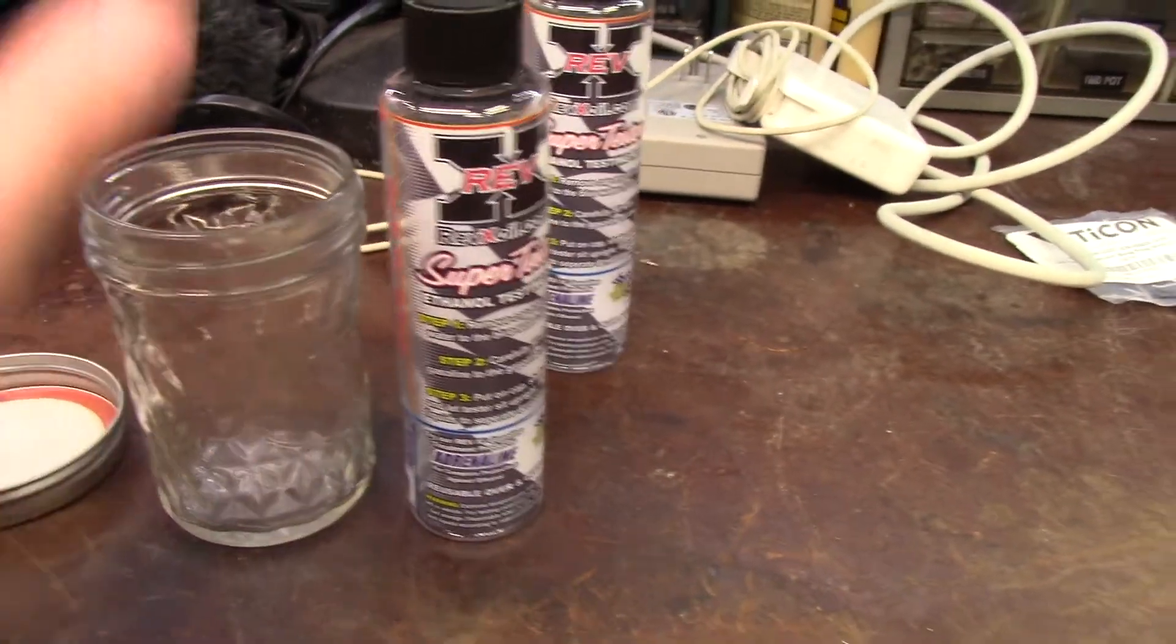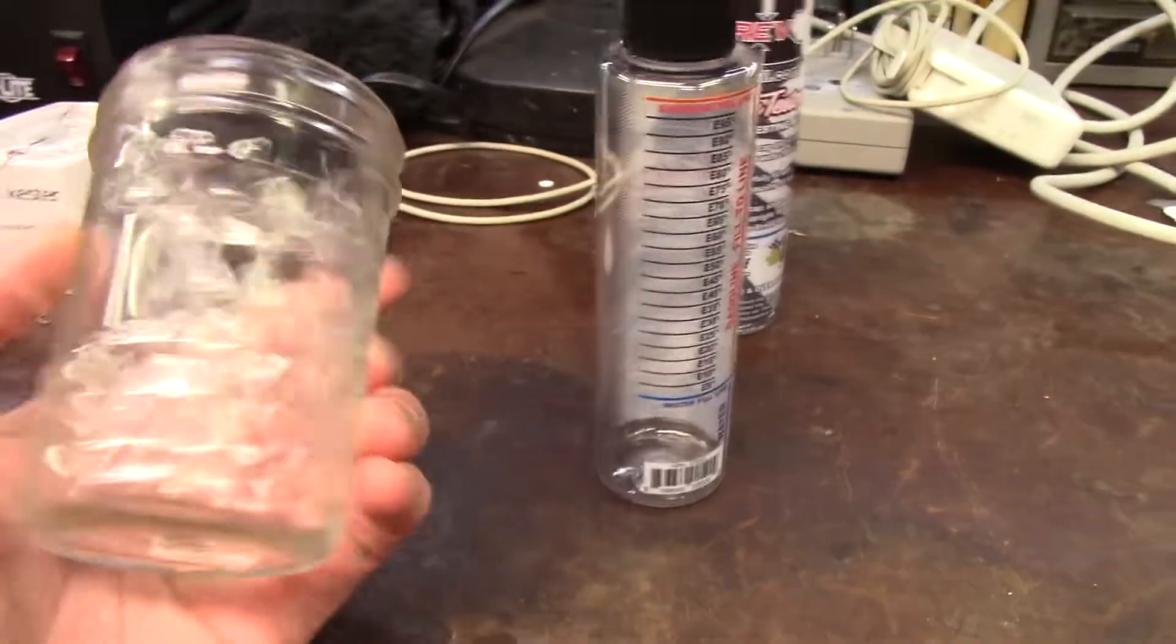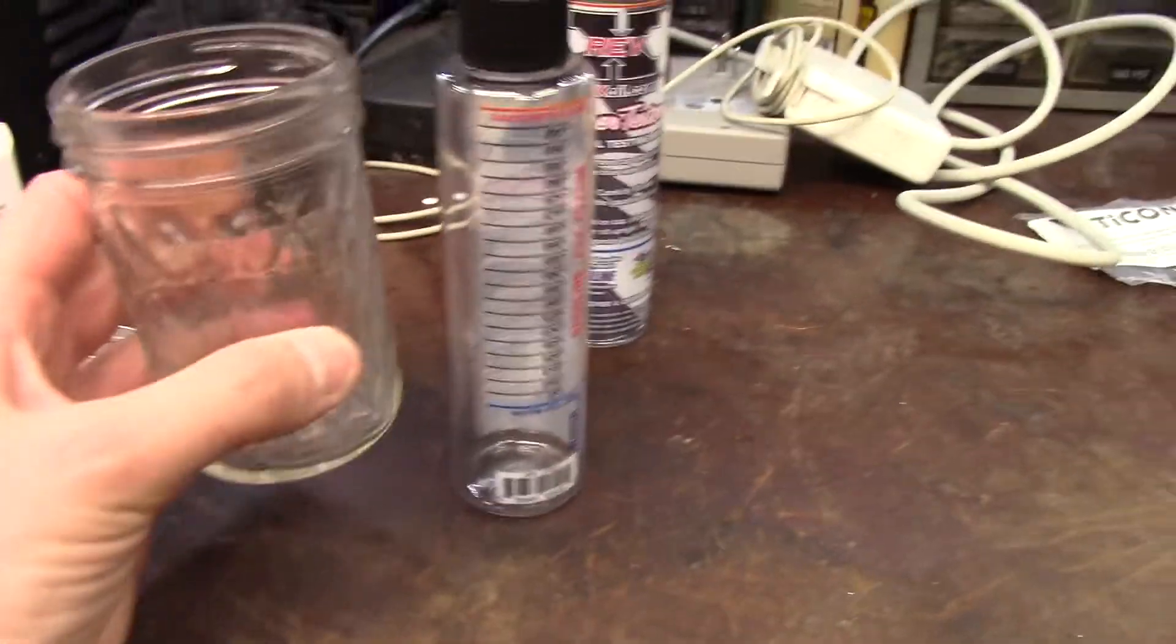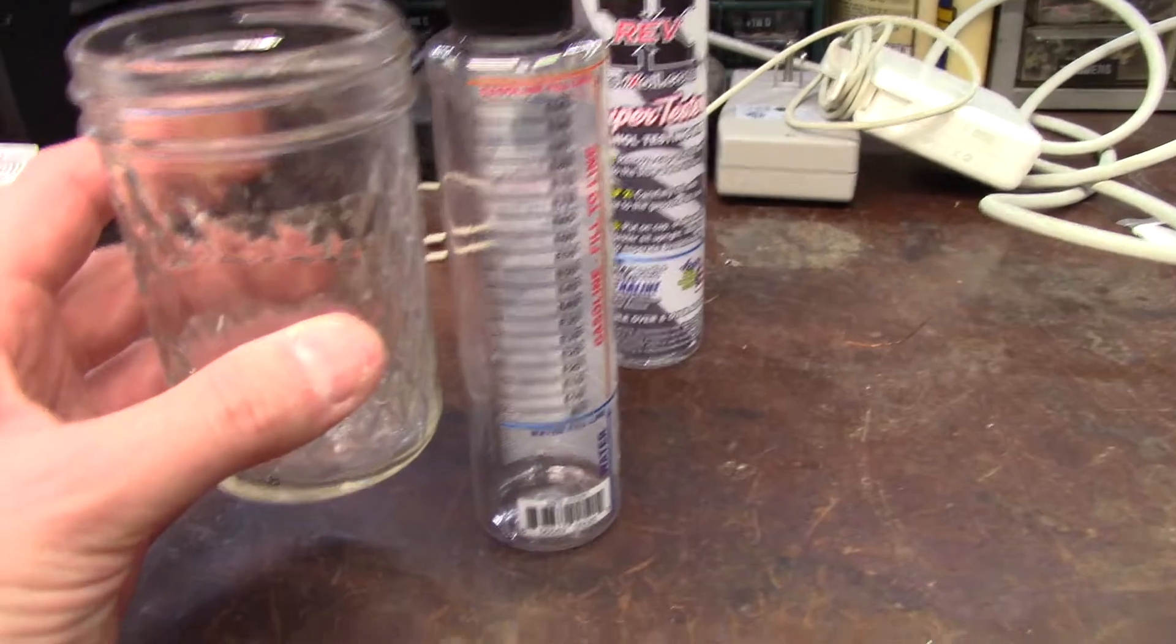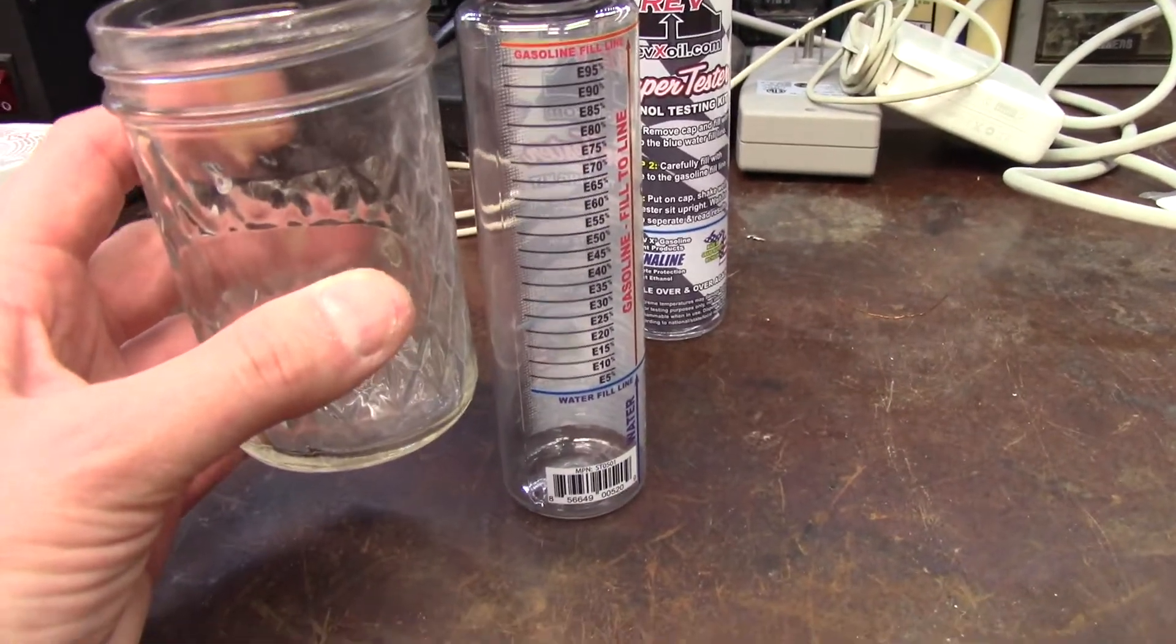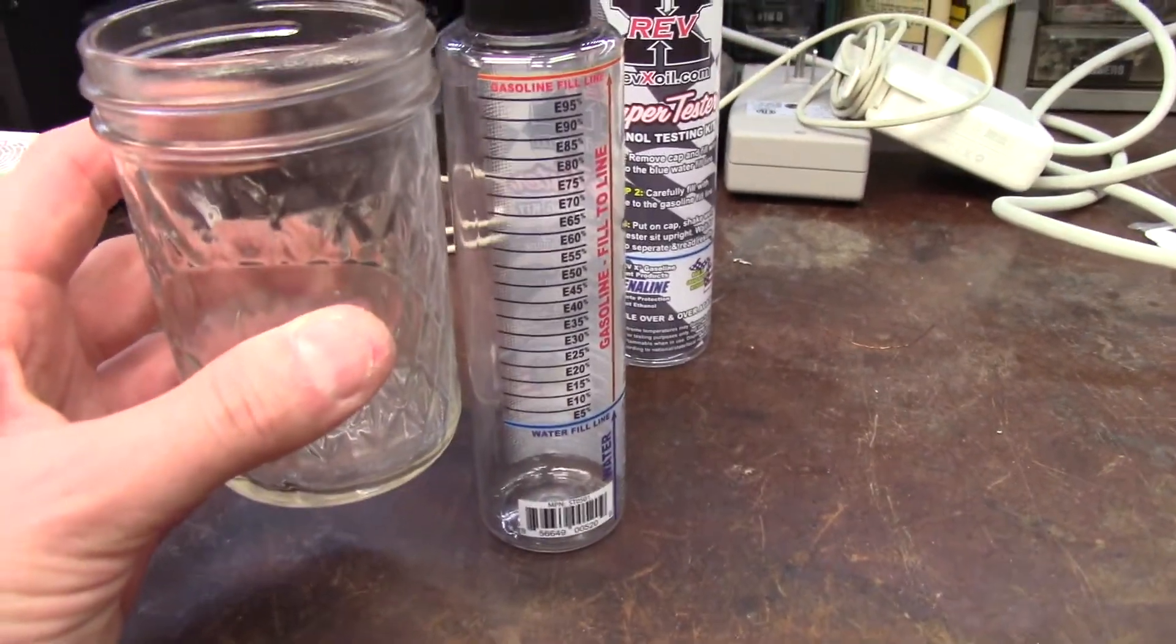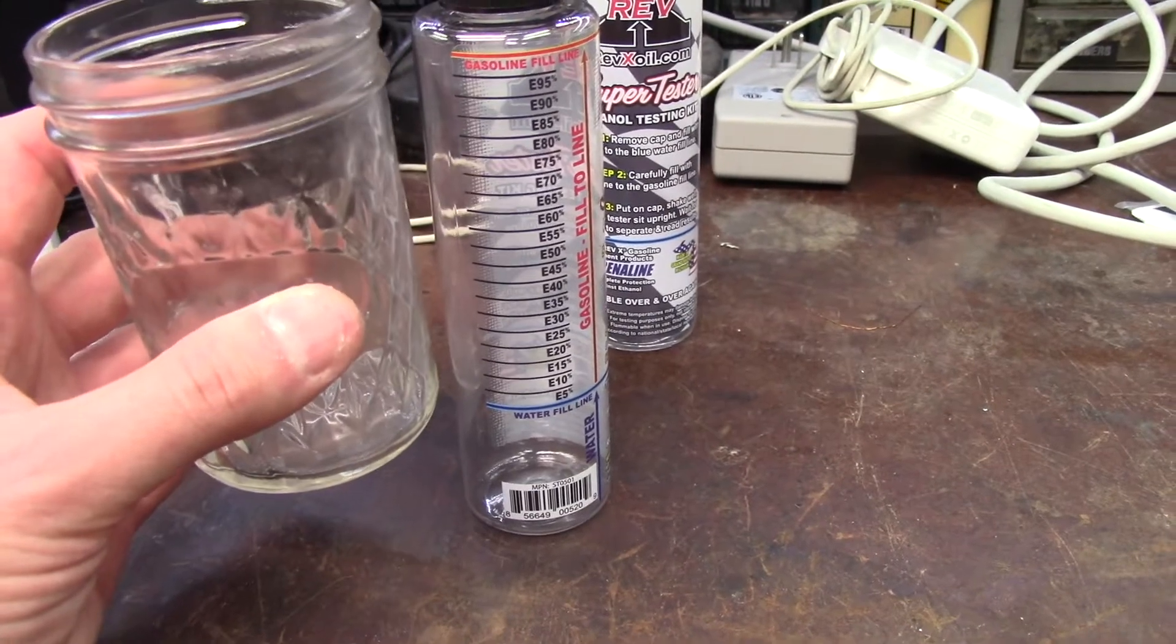Just figuring out how I can do my samples here, and I think this will work out perfect. These little pint jars will work out perfect. Whatever excess fuel is left over, we'll just dump it into the tank of one of the vehicles.